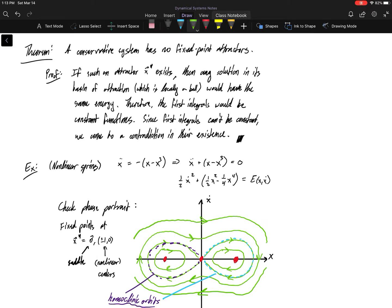And we would have to be conserved. The energy is conserved along trajectories. So as I get pulled into the fixed point, I have to be at the same energy level the whole time, which would mean that my first integral was a constant function. And that's not okay. Our energy functions cannot be constant. Therefore, we can't actually have a first integral for the system.